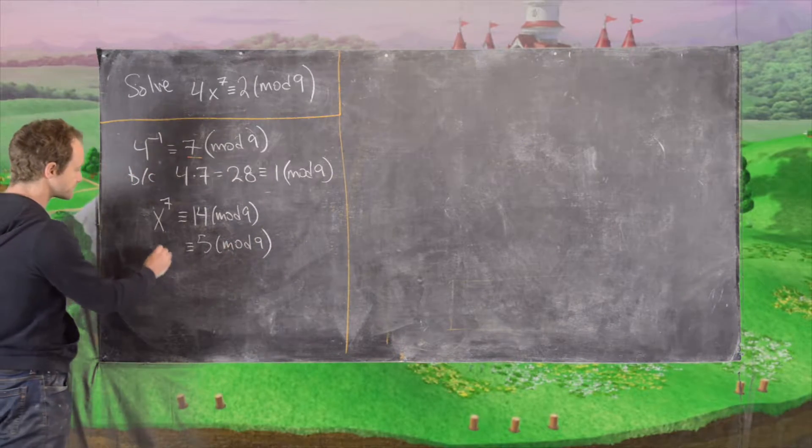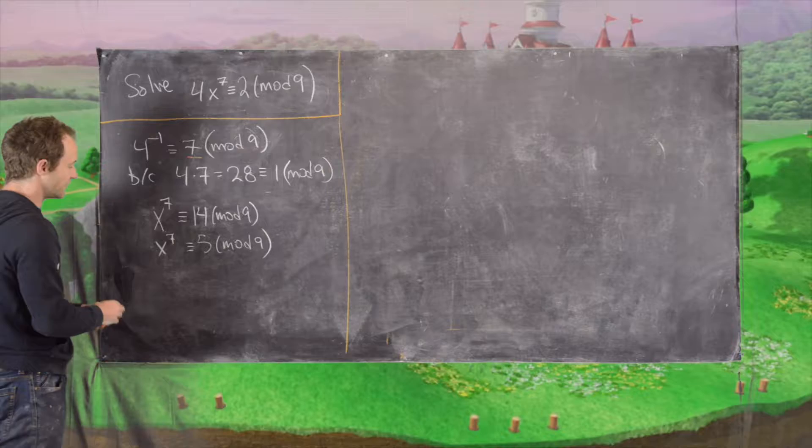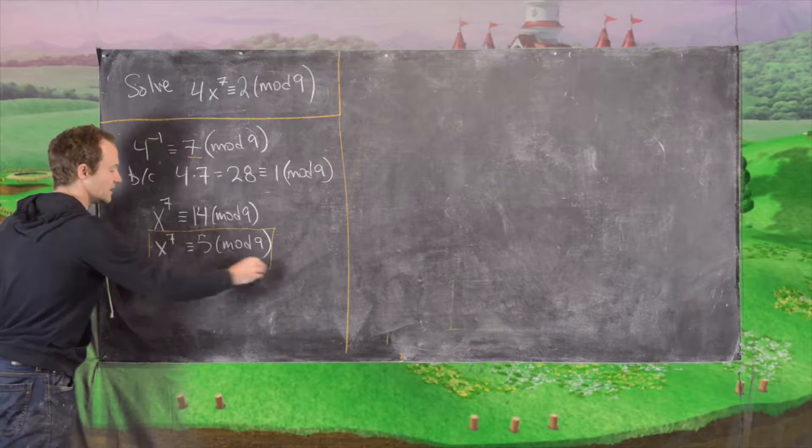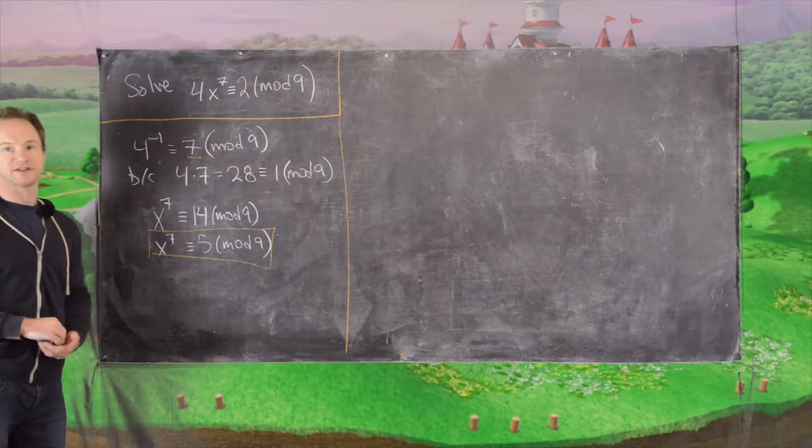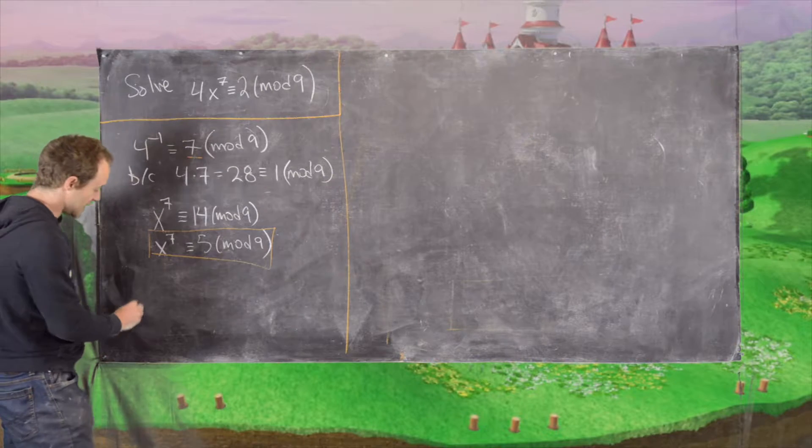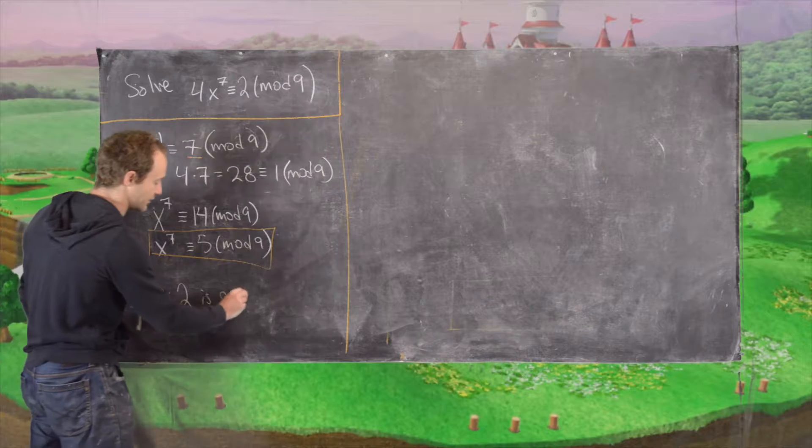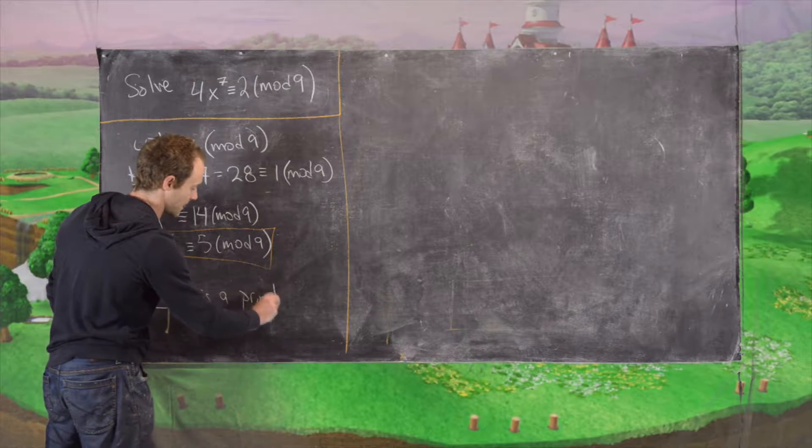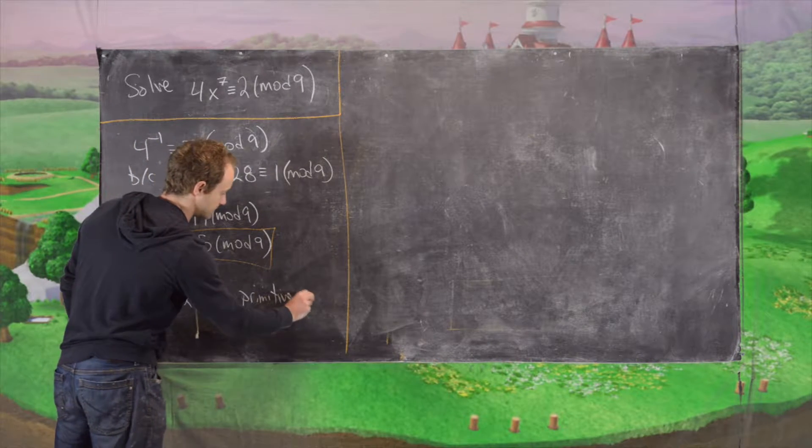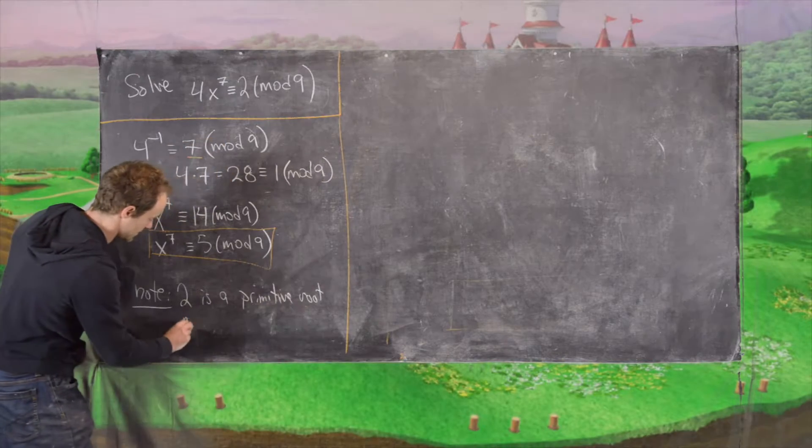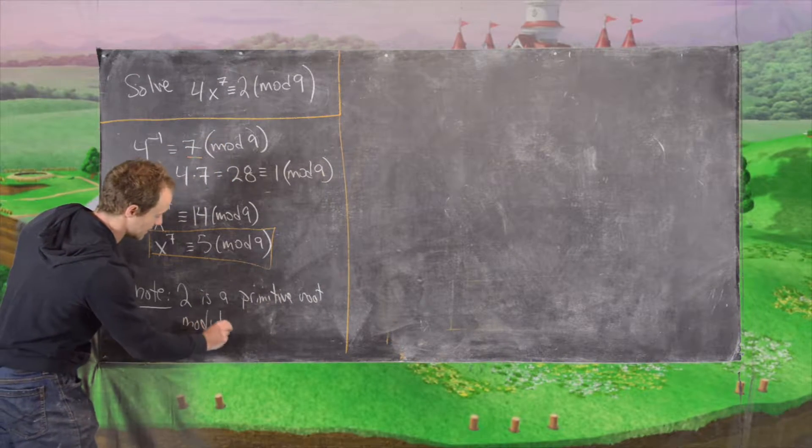So in fact we have boiled this down to solving the congruence x to the 7 is congruent to 5 mod 9. And now we'll also use another fact, and that is that 2 is a primitive root mod 9.